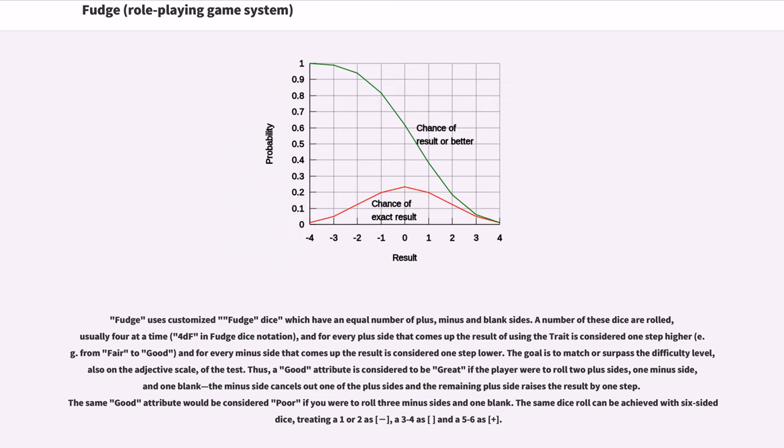Fudge uses customized Fudge dice which have an equal number of plus, minus, and blank sides. A number of these dice are rolled, usually four at a time, 4dF in Fudge dice notation, and for every plus side that comes up the result of using the trait is considered one step higher, for example from Fair to Good, and for every minus side that comes up the result is considered one step lower. The goal is to match or surpass the difficulty level, also on the adjective scale, of the test.